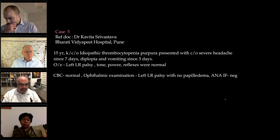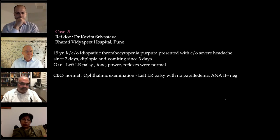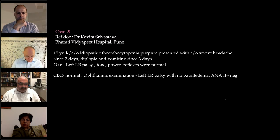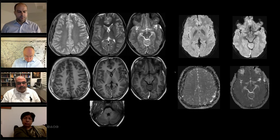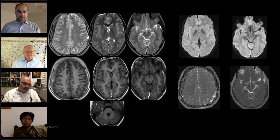Case five: a 15-year-old female known case of idiopathic thrombocytopenic purpura (ITP) diagnosed six months prior, presented with severe headache and diplopia for three days. Examination: right lateral rectus palsy; tone, power, and reflexes good. CBC was normal. Ophthalmology confirmed left lateral rectus palsy with no papilledema. ANA IF was negative. Suspected intracranial bleed given known ITP. MRI shows heterogeneous fluid levels in bilateral subdural spaces — bilateral subdural collections along anterior and lateral convexities — with interspersed T1 hyperintensities and iso-intensity. It is a mixed pattern subdural bleed.